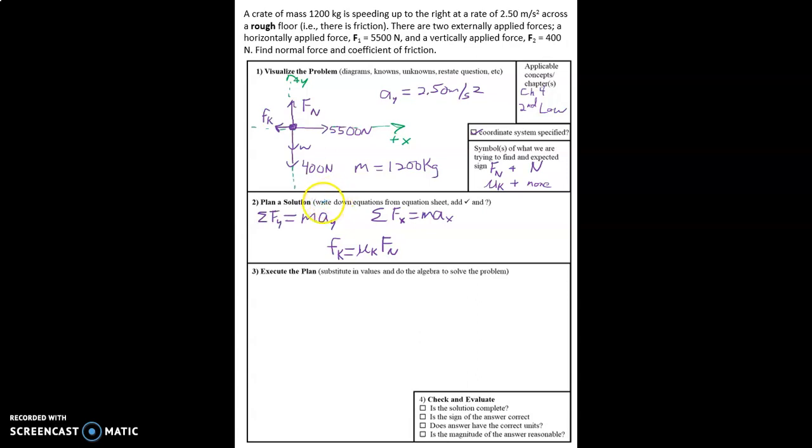As in all of these chapter 4 and 5 problems, we're using Newton's second law. There's only one object of interest here which is the crate. We also have this additional kinetic friction equation. So let's go ahead and get started.